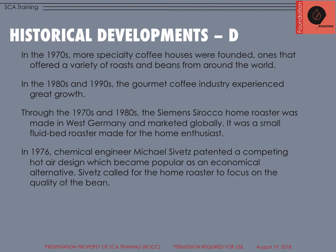Continuing on to the 1970s, more specialty coffee houses were founded, offering a variety of roasts and beans from all around the world — we're starting to recognize that coffee has more than one flavor. By the 1980s and 90s, a gourmet coffee industry experienced great growth. Through the 70s and 80s, the Siemens Sirocco home roaster was made in West Germany but marketed globally — a small fluid bed roaster for the home enthusiast. By 1976, chemical engineer Michael Sivitz patented a competing hot air design, which became popular as an economical alternative. Sivitz called for a home roaster to focus on the quality of the bean.